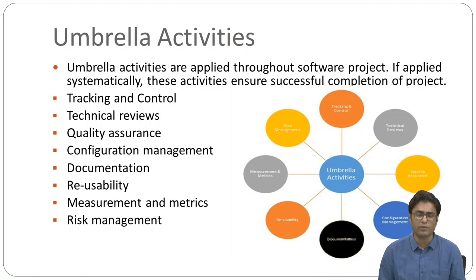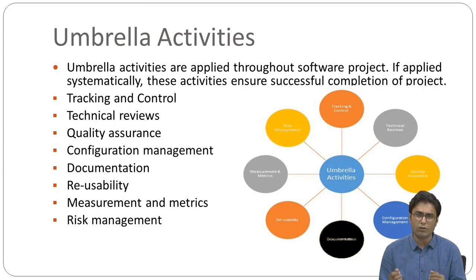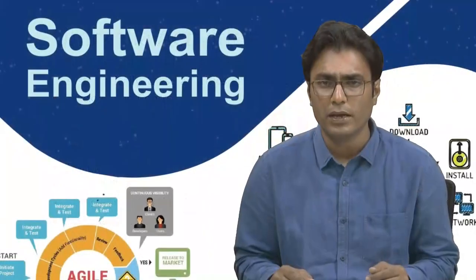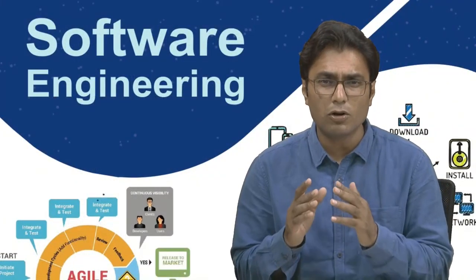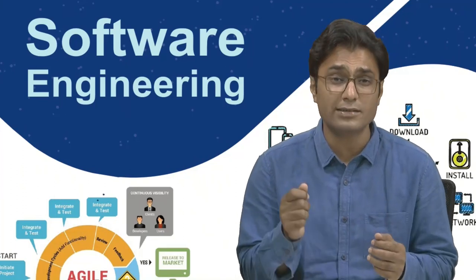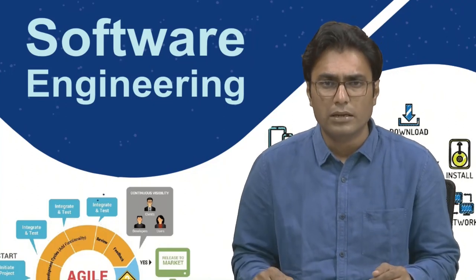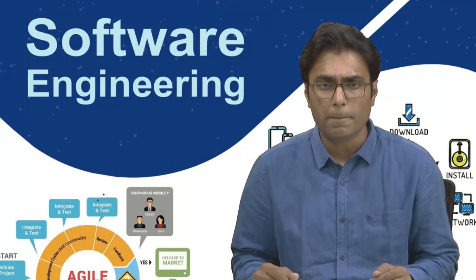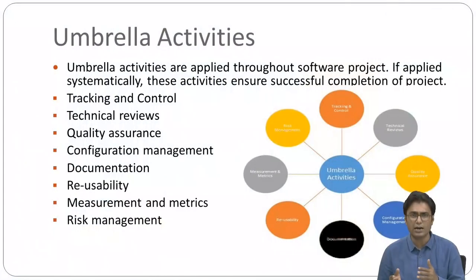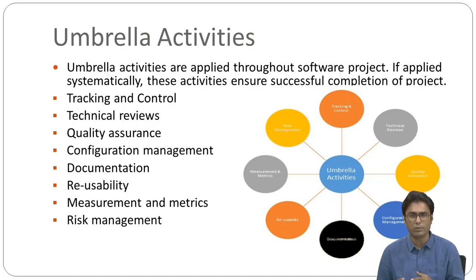Let us define each activity. Tracking and control: the development team assesses the project plan against a predefined schedule. If the project is not going according to schedule, necessary actions are taken to maintain it. Technical reviews: the aim is to detect quality problems and suggest improvements. The technical person focuses on quality from the customer's point of view.